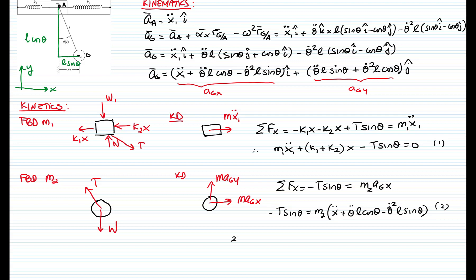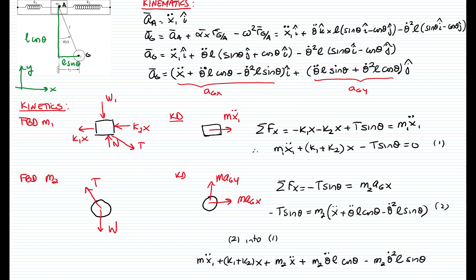Substituting equation 2 into equation 1, we have mass 1 times x1 double-dot plus the spring terms with displacement, and we substitute T sine of theta with the expression just found. This last term, which contains the velocity squared and sine of theta, is a non-linear term.